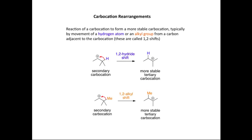Similarly, we can propose a 1,2-alkyl shift, where we move the methyl group on the adjacent carbon. It exchanges positions with the positive charge, and the electron density in this carbon-methyl bond moves to the neighboring carbon. We form a new carbon-carbon bond and a new tertiary carbocation. The starting carbocation is secondary and the product is tertiary, so we form a more stable carbocation from this rearrangement.